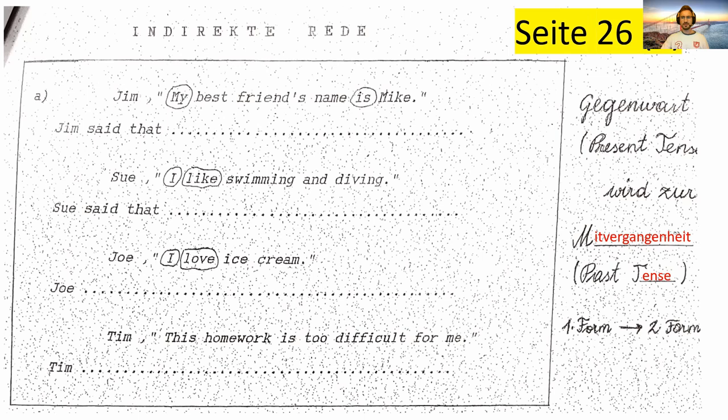Du kannst das Video jederzeit natürlich pausieren, damit du auch gut mitkommst. Du hast hier jetzt deinen Satz in der direkten Rede — du erkennst den, wie wir in letzter Stunde besprochen haben, an den Anführungszeichen. Und es sind immer wieder Wörter eingekreist, die sich von der Umwandlung direkte Rede in die reported speech verändern. Worauf wir uns jetzt konzentrieren, ist die Zeitformen — also die Verben, die sich in unterschiedliche Zeitformen verwandeln.